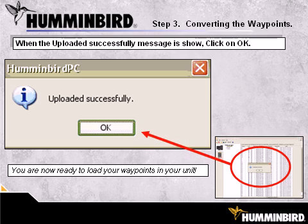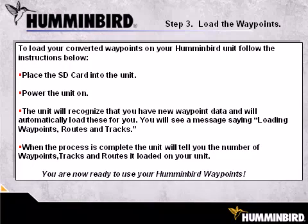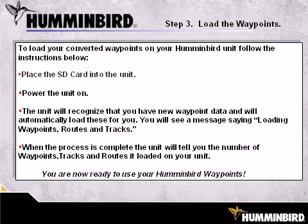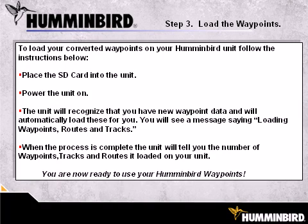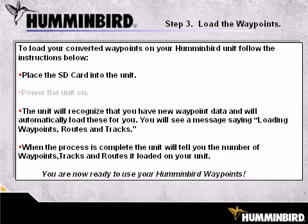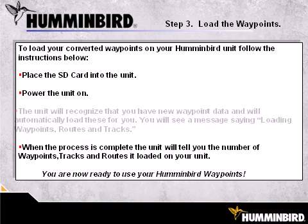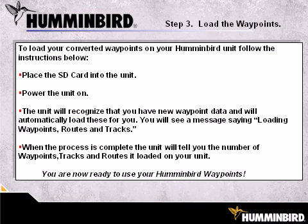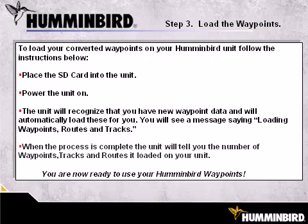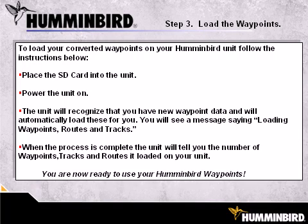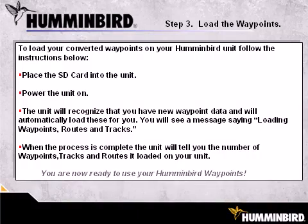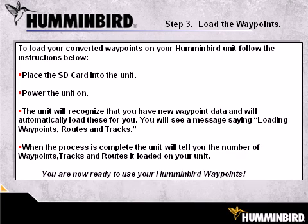You are now ready to load your waypoints on your Humminbird. Updating your Humminbird unit with your converted waypoints is simple and easy. First, place the SD card with your waypoints into the card slot on your unit, then power the unit on. The unit will recognize the new waypoints and display a message telling you that it is importing new waypoints, routes, and tracks. When finished, it will display a message telling you how many waypoints, routes, and tracks were loaded. That's it — you are ready to use your newly converted waypoints in your Humminbird.